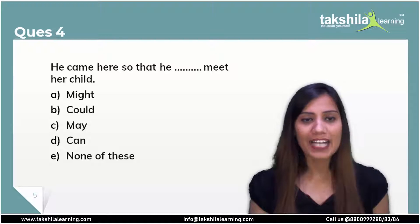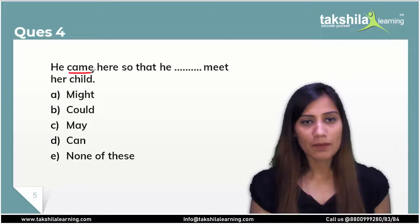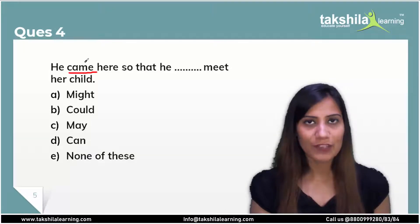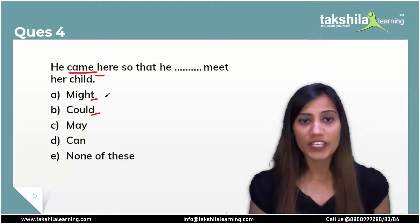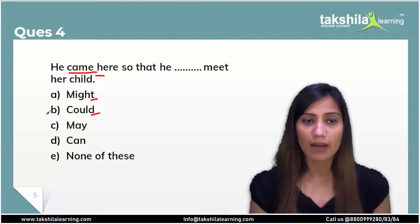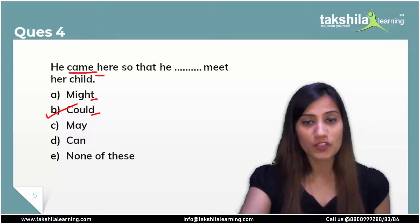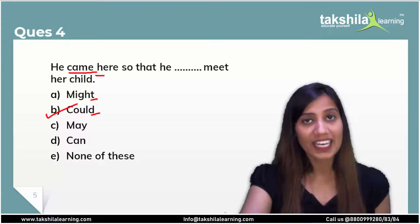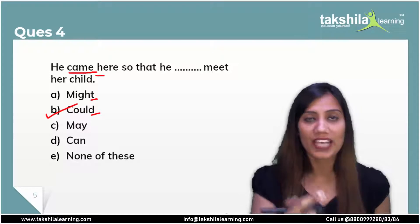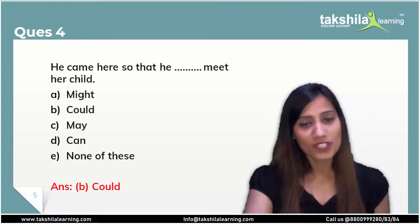Next question: 'He came here so that he dash meet her child.' Now look at the tense — 'came' is the second form of the verb, showing past tense. That means the modal here should also be in past form — might or could. Since he came here so that he could meet her child — it is about ability/purpose in past context. So we use 'could' here. He came here so that he could meet her child. For question 4, the correct answer is option B: could.